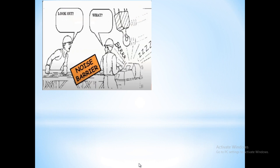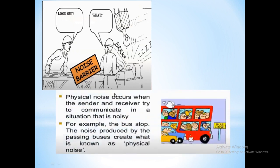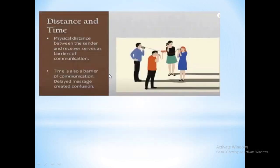The first barrier is noise. Suppose you are near a factory with a lot of noise — you and another person cannot hear each other. Physical noise occurs when the sender and receiver try to communicate in a situation that is noisy. Excessive loudness means they cannot communicate properly. This is called a noise barrier. Next is distance and time: when people are standing far apart and want to talk, the distance prevents them from communicating well. This is also a type of barrier.